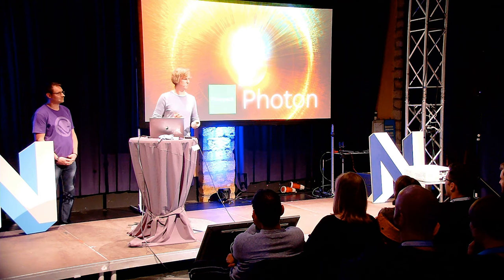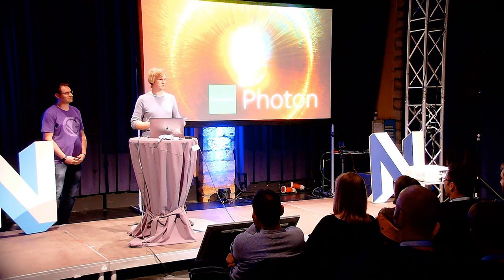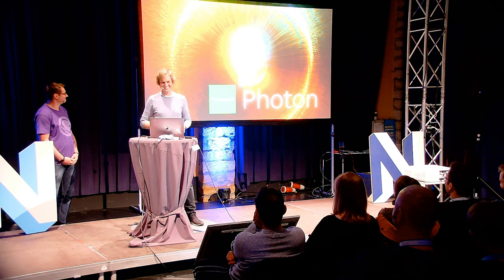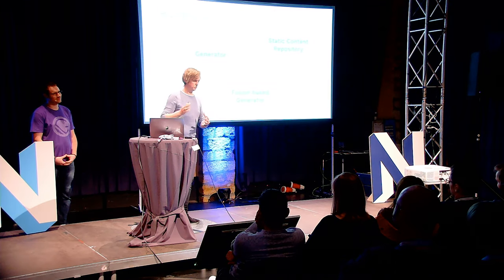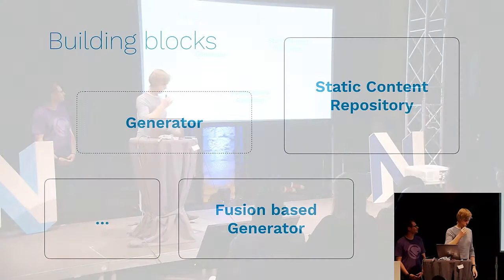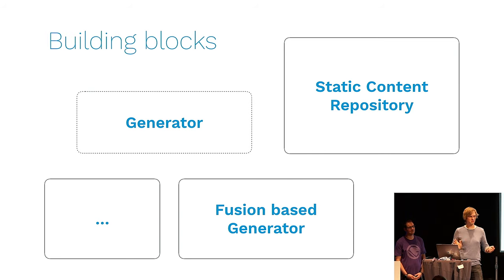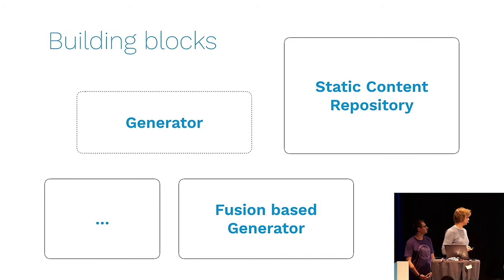About a year ago I asked myself: can we use Neos as a static site generator? Can we even go without a database or have something fully static? I started with an experiment called Photon. If you know photons from physics — it's a duality of particles, it's a wave and a particle — and I needed a name. The idea behind Photon is not to have only one static site generator like simple static file publishing, but to have building blocks where you can think about your publishing pipeline.